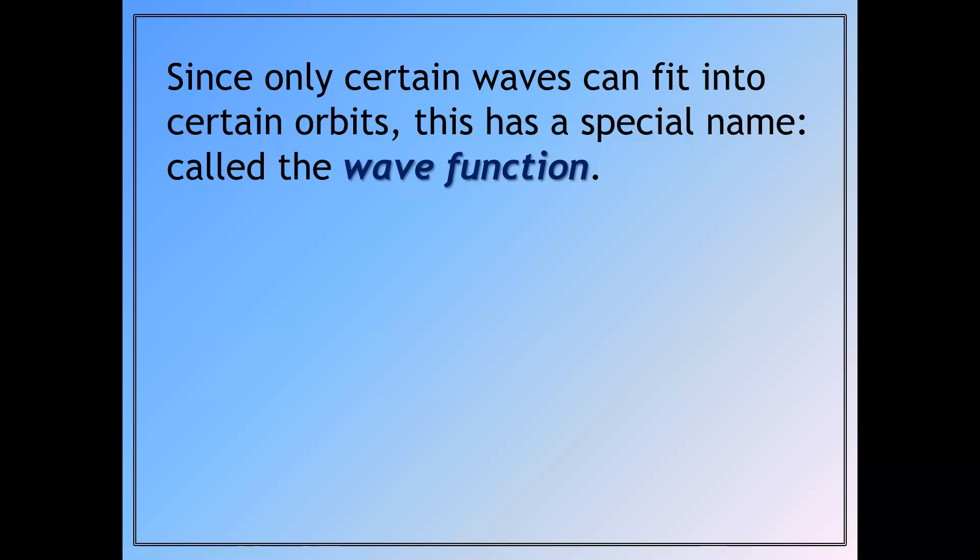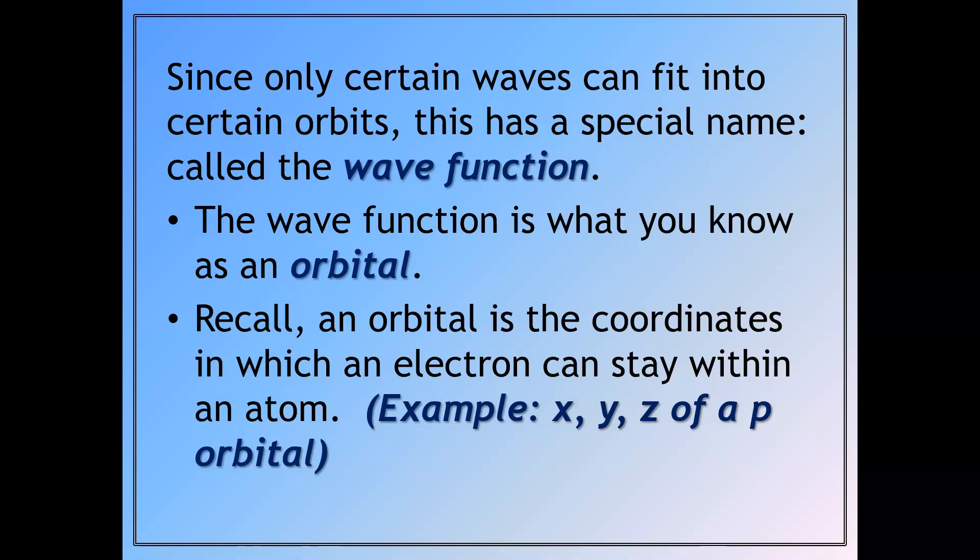So since only certain waves could fit into certain orbits, it had a special name called the wave function. The wave function is what you know now as an orbital. Recall, an orbital is the coordinates in which an electron can stay within an atom.